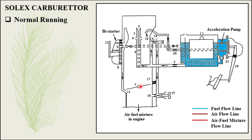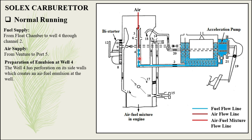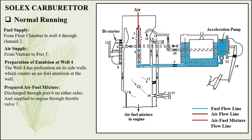In the normal running condition, the throttle which was previously closed is now open. Fuel is supplied from channel number 2 to well number 4. Air is supplied from port number 5. At well number 4, which has side perforations, there is an emulsion of air and fuel prepared. The prepared mixture is then given out from port number 6 on either side and supplied to the engine through throttle valve number 7 in the downward direction.